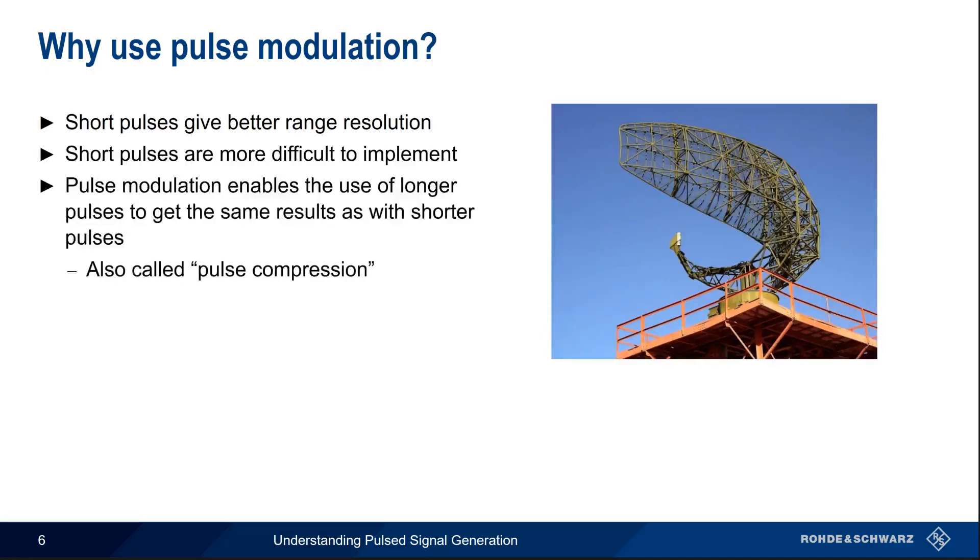As we mentioned a moment ago, pulse modulation involves changing the frequency or phase of the pulse. Changing the frequency or phase of the pulse makes it easier to detect and correlate them.